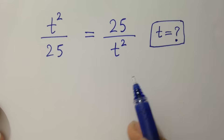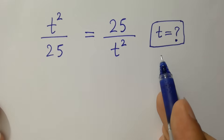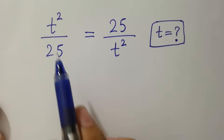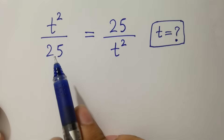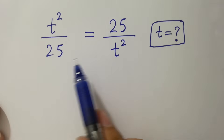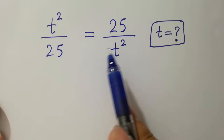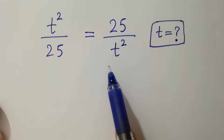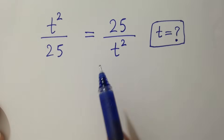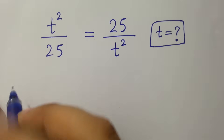Hello friends. Find the value of t if t squared over 25 equals 25 over t squared. Let's have a solution.